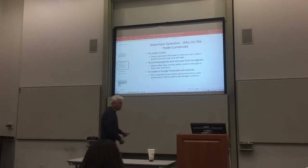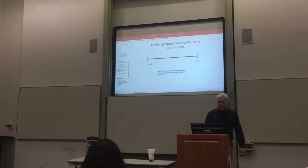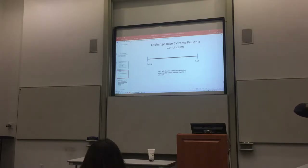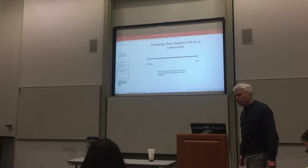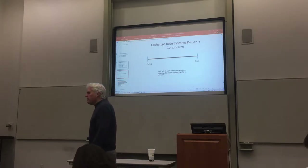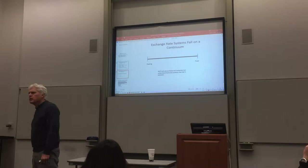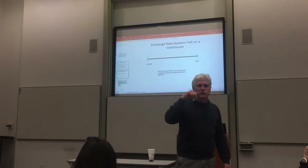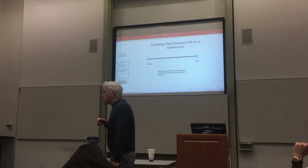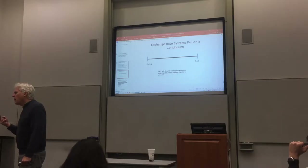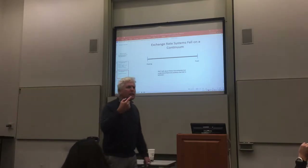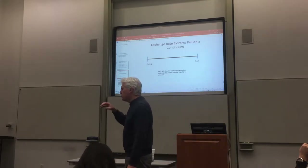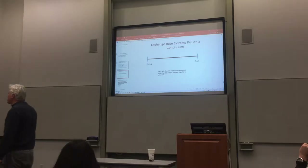Exchange rate systems fall on a continuum. At one extreme, currencies are allowed to freely float — meaning exchange rates are set by the forces of demand and supply. In a world of freely floating exchange rates, two critical macroeconomic variables that influence the exchange rate are the level of inflation and the level of interest rates. So interest rates and inflation rates are critically linked to exchange rates under a floating rate system.